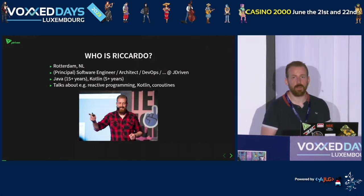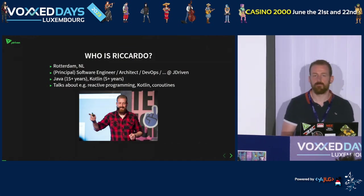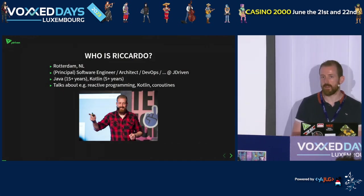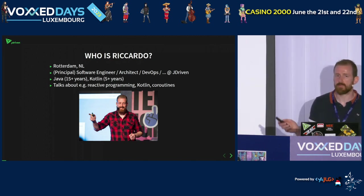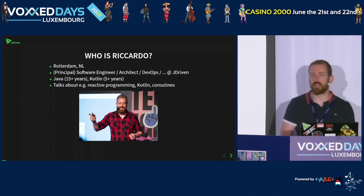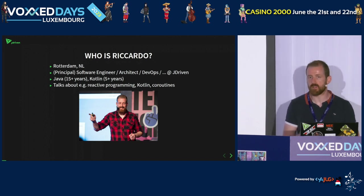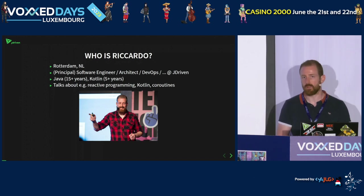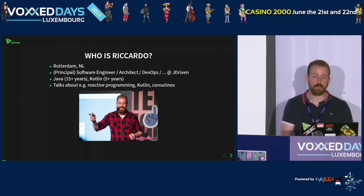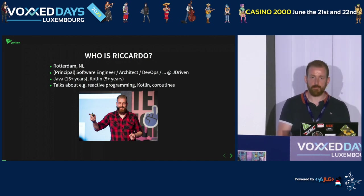So who am I? My name is Ricardo Lipolis. I'm a software developer, software engineer, architect, DevOps — you know, like everybody comes up with these new titles. But basically, I develop software in the Netherlands at J Driven, a company that's doing consultancy for all sorts of big companies in the Netherlands, based around Rotterdam.